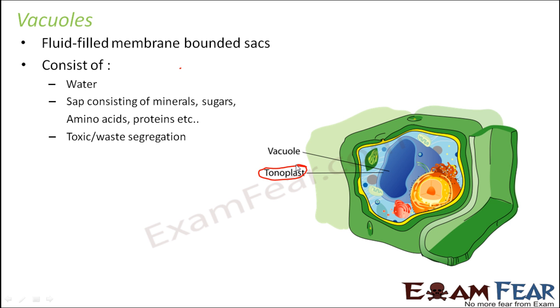Now, how are these vacuoles formed? They are formed by the infolding of some portion of the cell membrane. The yellow-colored structures represent your cell membrane, and some portion of the cell membrane itself gets folded to form the vacuole structure.